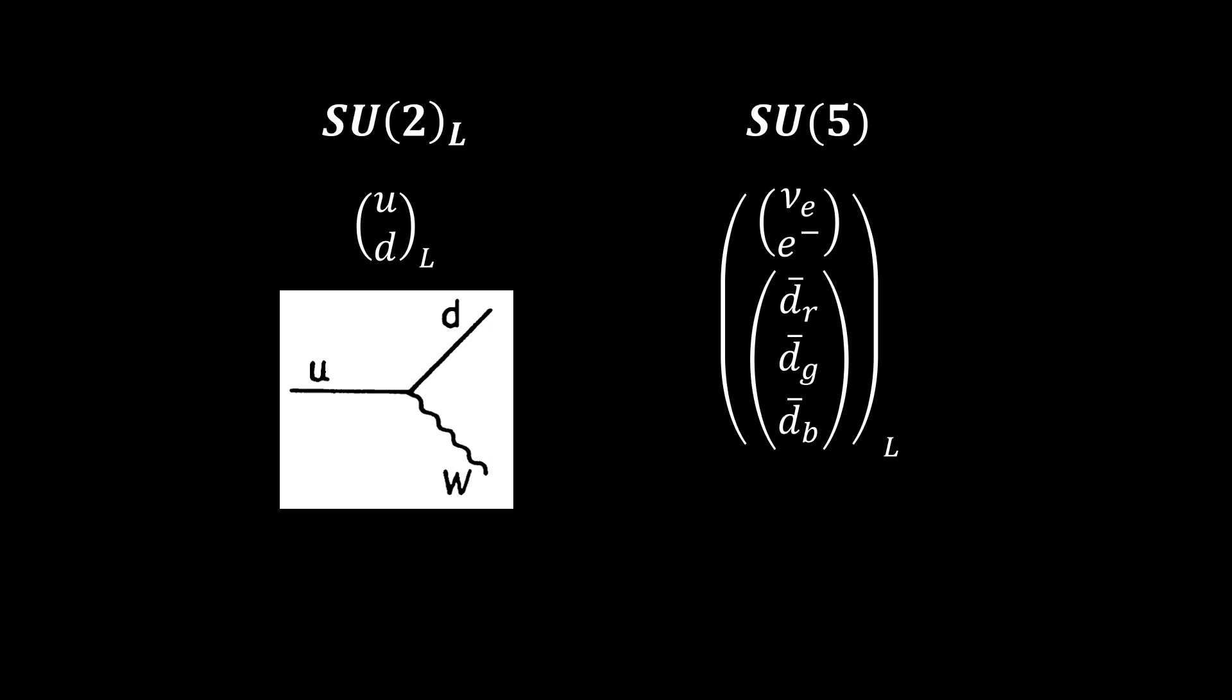We expect quarks to turn into leptons in a way that conserves color since SU(3) is a part of the SU(5) invariant theory, and electric charge will be conserved, just as it is in the standard model.